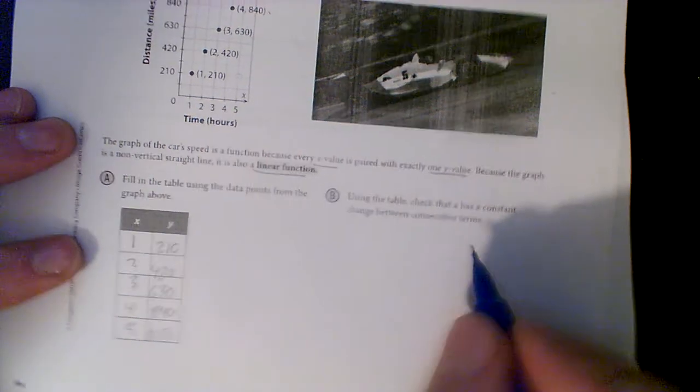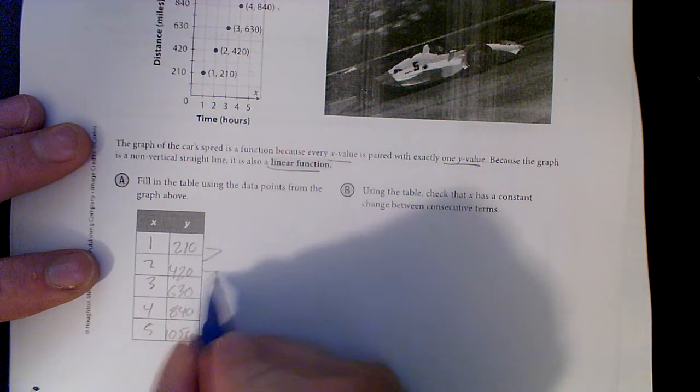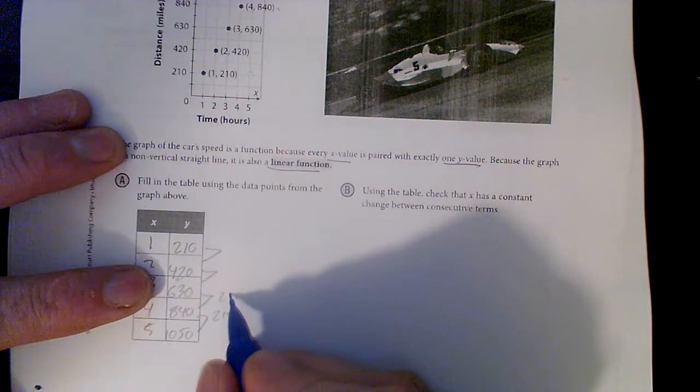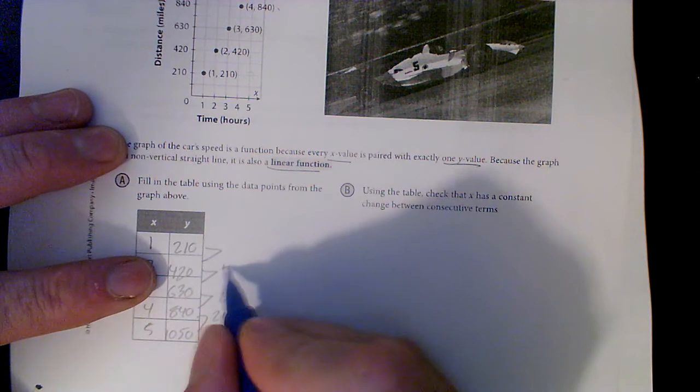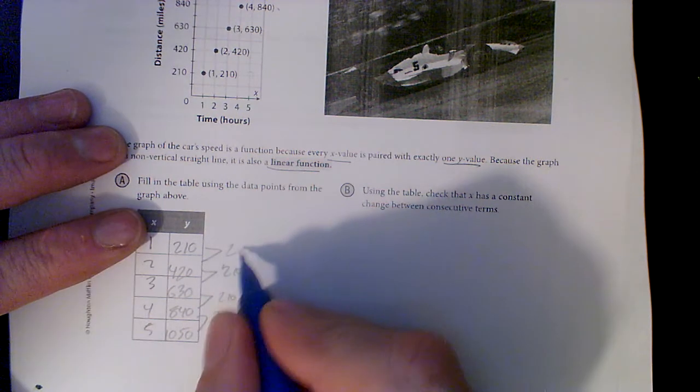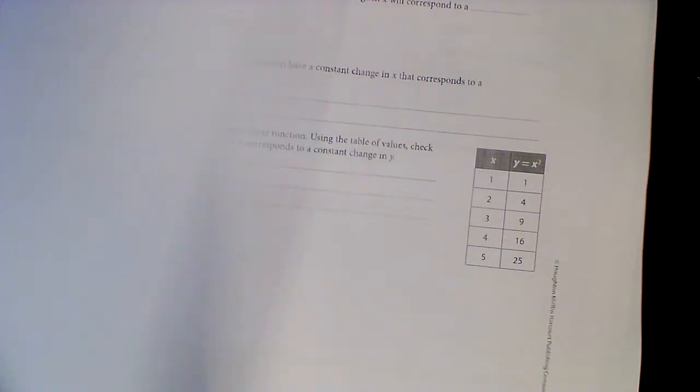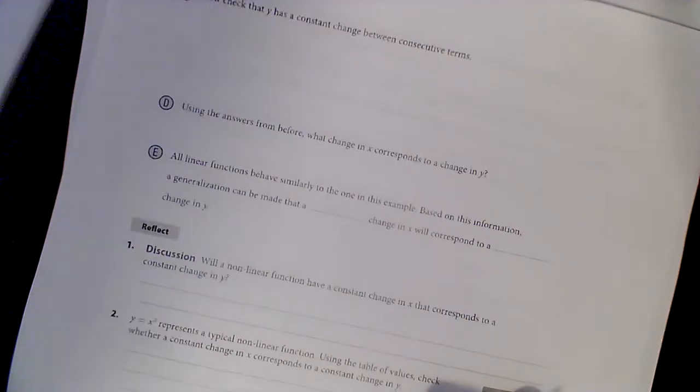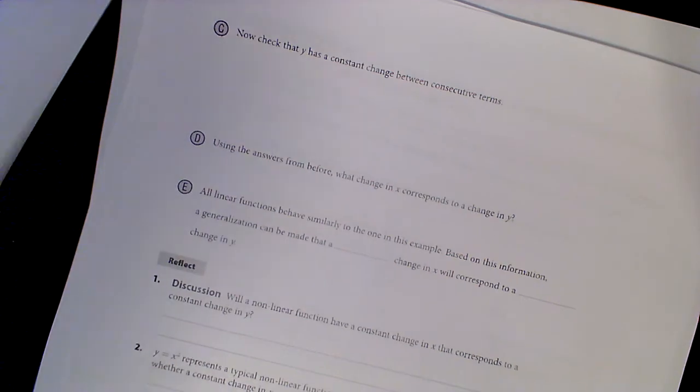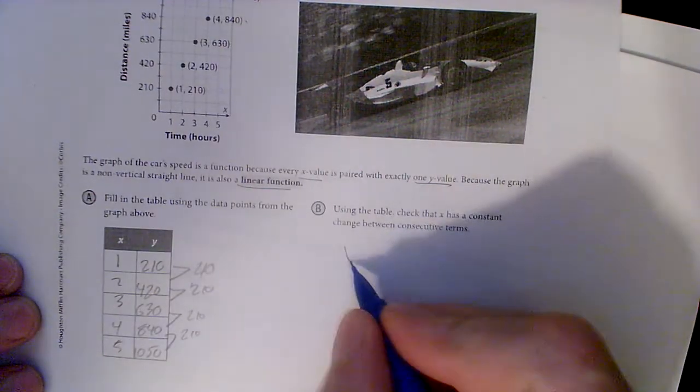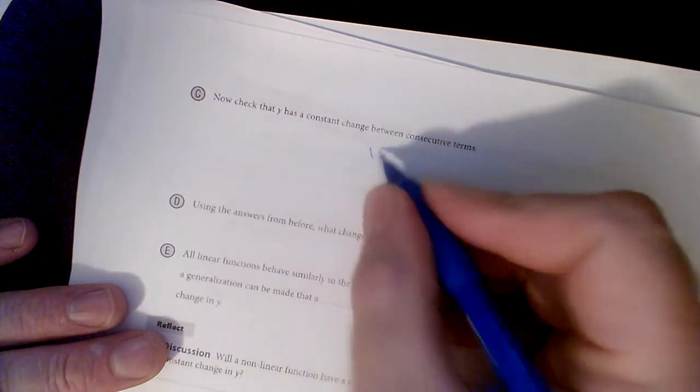If I subtract, it is constant: it's 210. This minus this, this minus this is 210, and this minus this is 210. Alright, we may come back - and now check that Y - oh, you know what, I did check that Y. X is 1, 2, 3, 4, 5. X has a constant change? Yes. And Y's constant change is 210? Yes.